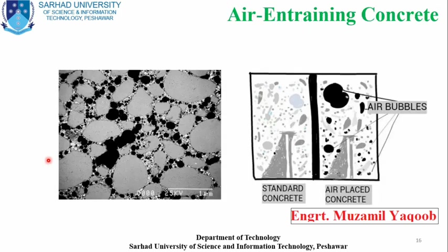In these pictures you can see the air bubbles present in air-entrained concrete. The black dots in this microscopic picture show air bubbles, or air entrained in the concrete. On the other hand, where ordinary Portland cement is used, there are no such air bubbles. The left picture is a microscopic image of a concrete sample showing the black areas as air bubbles — this is how concrete looks when air-entrained cement is used.